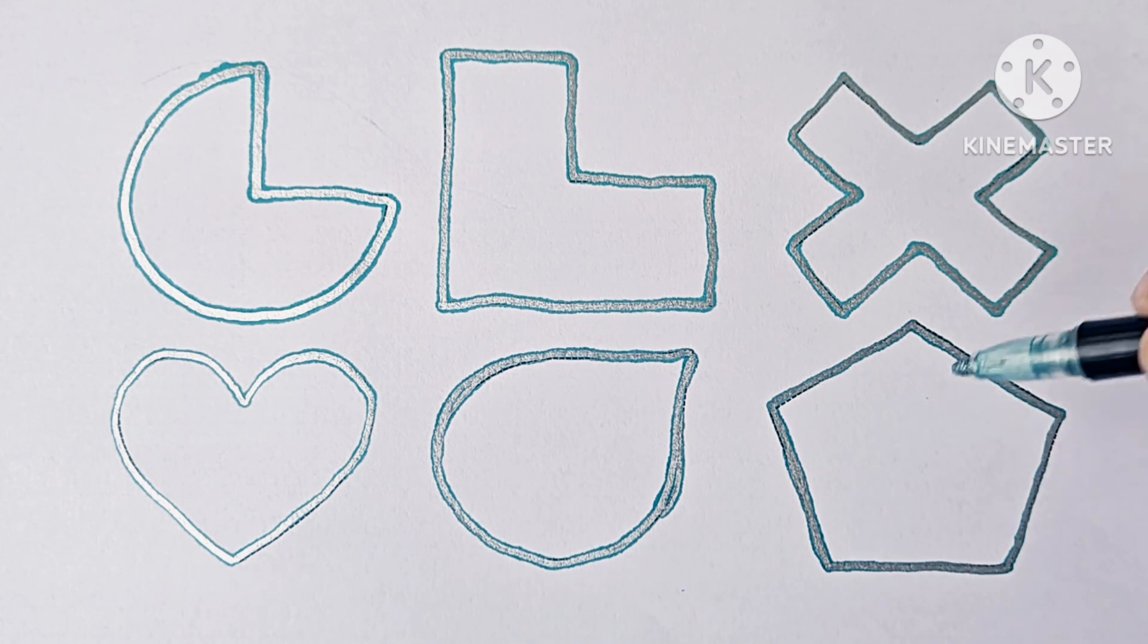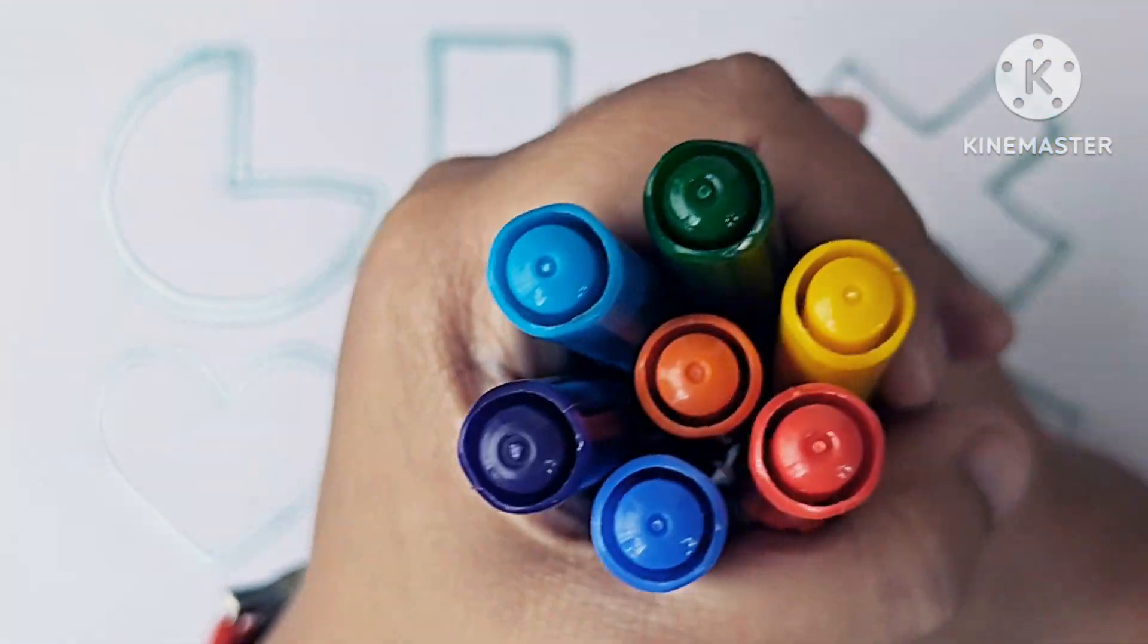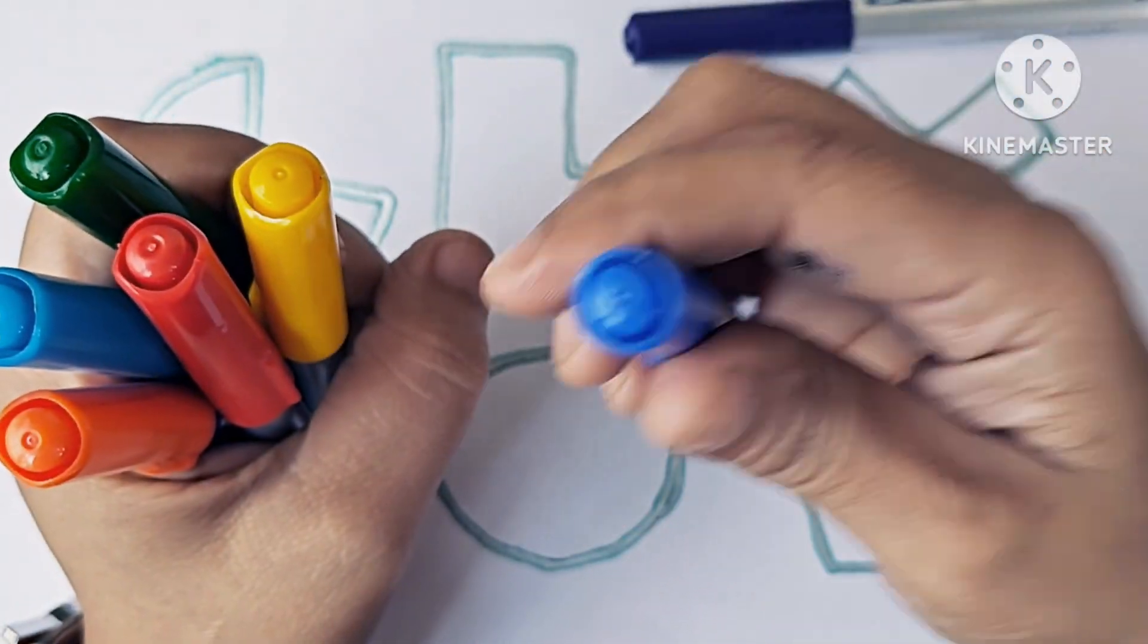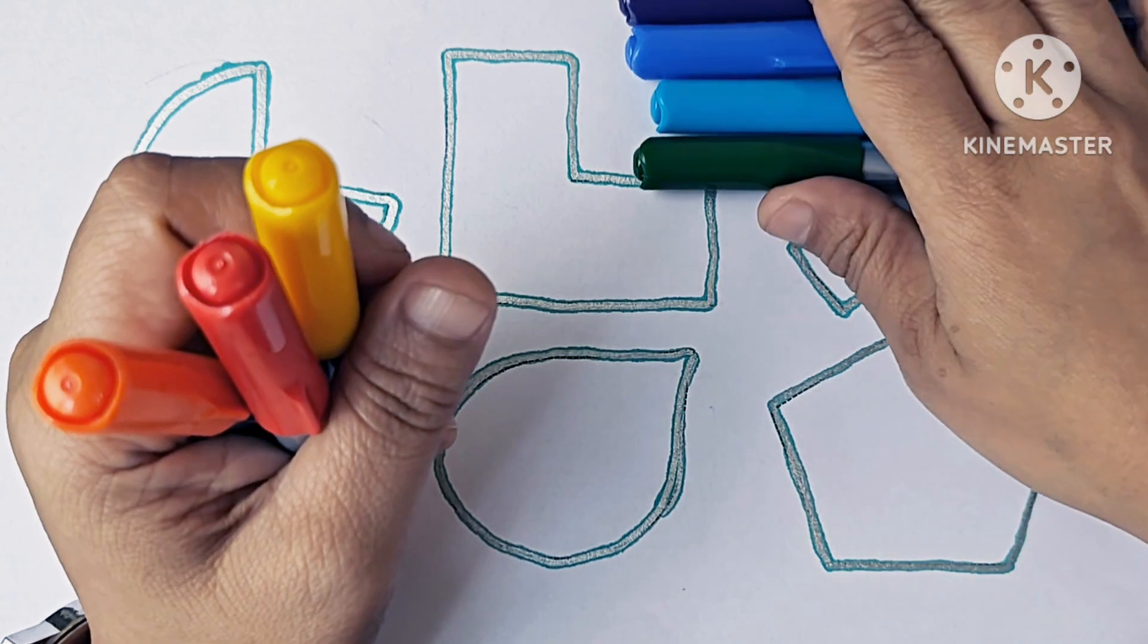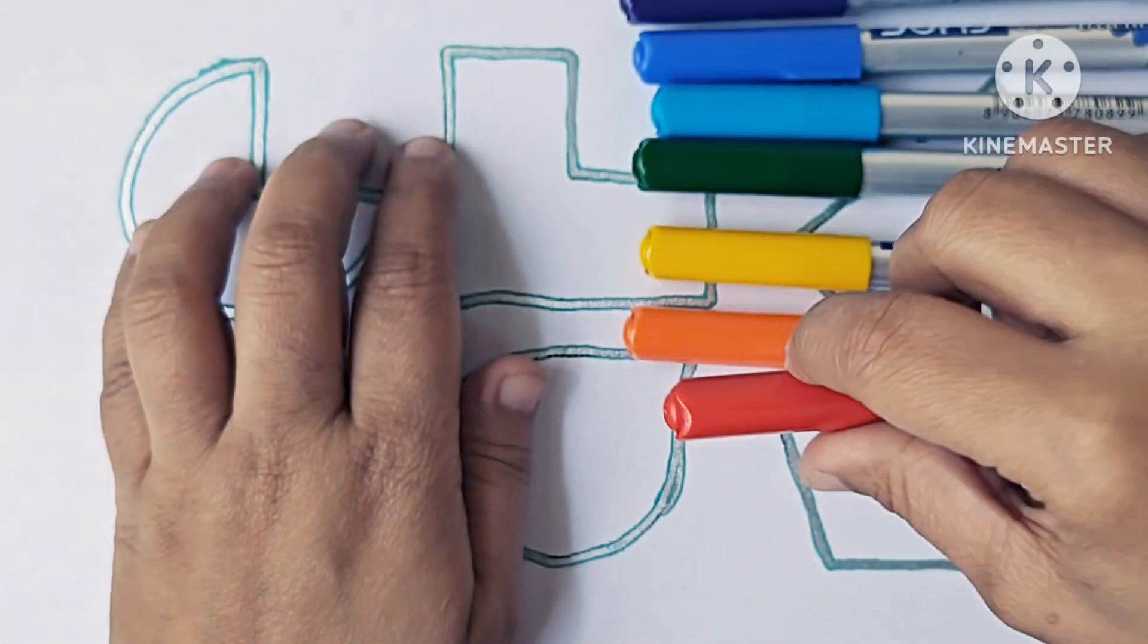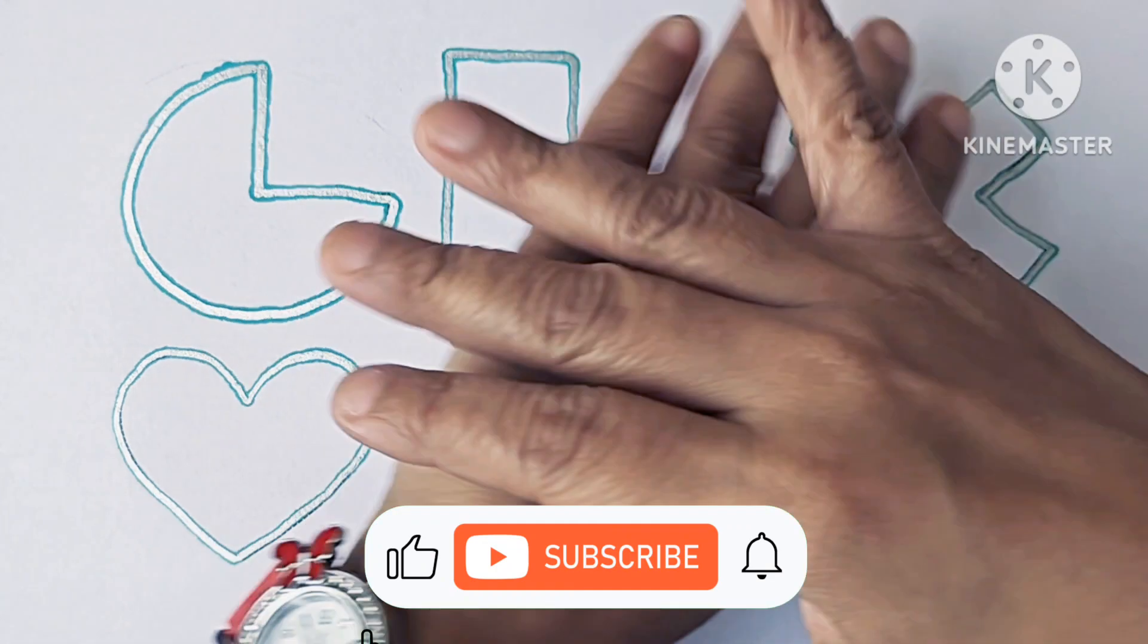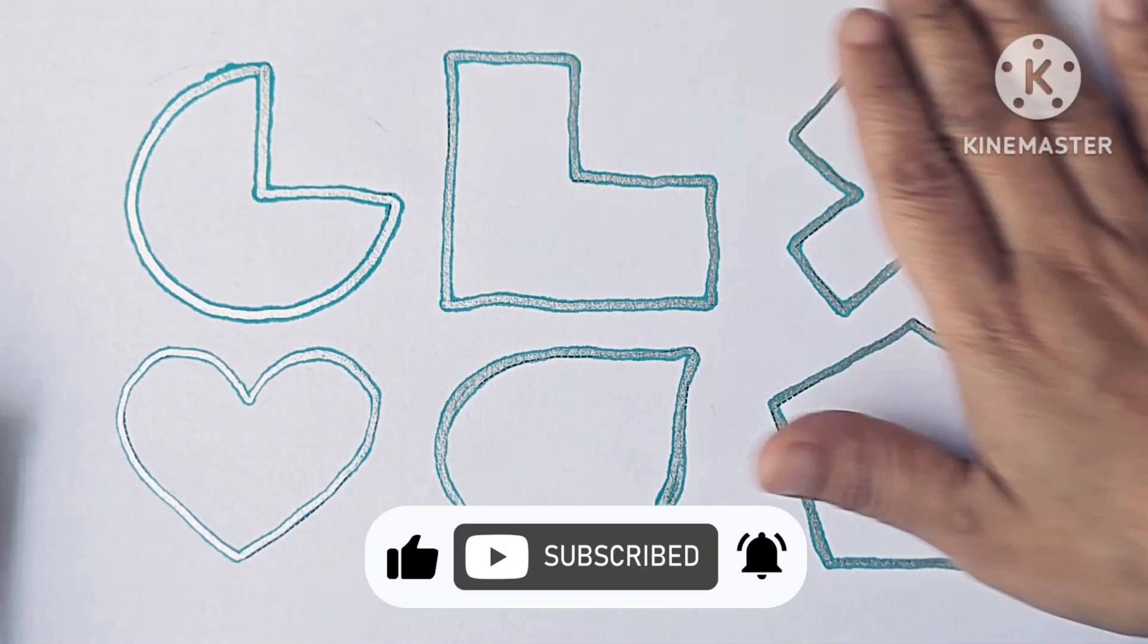This is pentagon. Let us learn some rainbow colors. These seven colors are rainbow colors: violet, indigo, blue, green, yellow, orange, and red. These are our rainbow colors. Now we will color all these shapes with these rainbow colors.